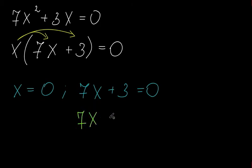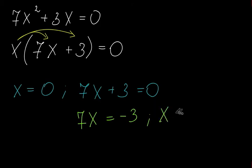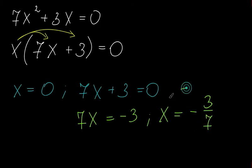So 7x is equal to negative 3, because we move the 3 to the other side. We divide both sides by 7, and we get that x is negative 3 over 7. So these are our two solutions: x₁ = 0 and x₂ = negative 3 over 7.